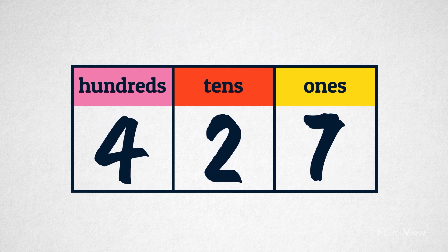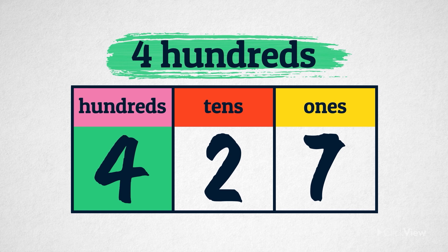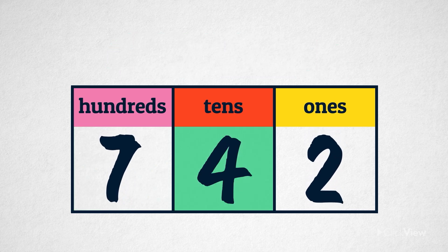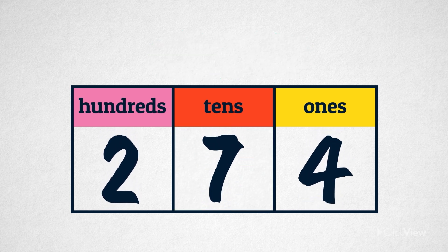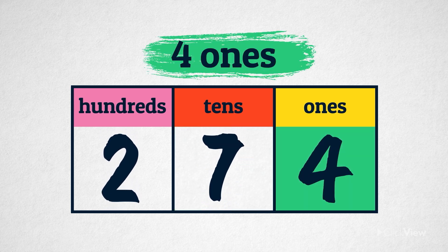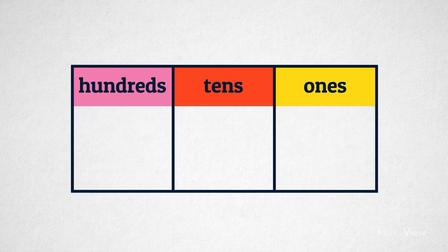So when the digit 4 is in the hundreds column, it represents four hundreds. When it's in the tens column, it represents four tens. And in the ones column, it represents four ones. The place value columns go on infinitely.